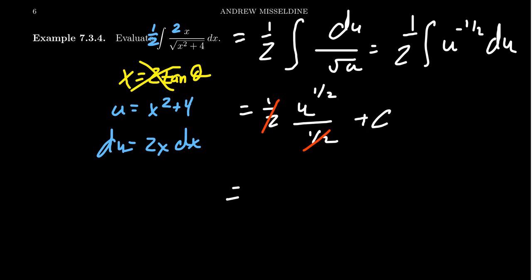And then replacing u with the original variable x, we're going to get the square root of x squared plus 4, plus an arbitrary constant. And so you can see that in this situation, the u substitution was a much simpler approach than trigonometric substitution.